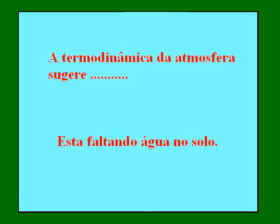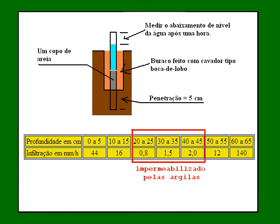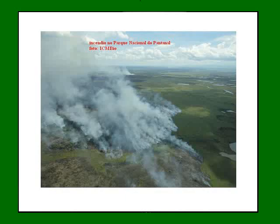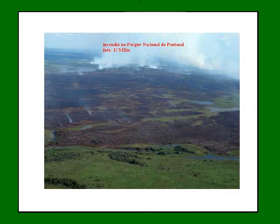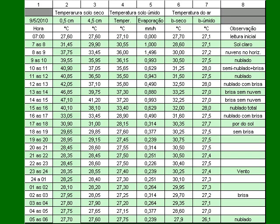The thermodynamic analysis suggests that the atmosphere is lacking water in the soil. Measuring the speed of water penetration into the soil found that this velocity varies with depth and follows a specific table — suggesting a hardpan ceiling at 20 to 45 centimeters deep. This was verified in the Brazilian Cerrado during a 2010 fire that burned 1,231 square kilometers: despite rain witnessed by pools of water, the soil was still dry. The greenhouse effect is shown here in Manaus in these tables.